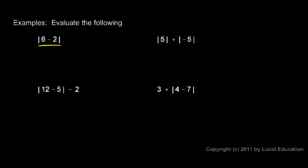So let's start here and do the first one. We do 6 minus 2 is 4, and then we take the absolute value of that. I'm going to do this in steps — I'm going to replace the 6 minus 2 with a 4. So instead of having the absolute value of 6 minus 2, I have the absolute value of 4, and that's obviously equal to 4.